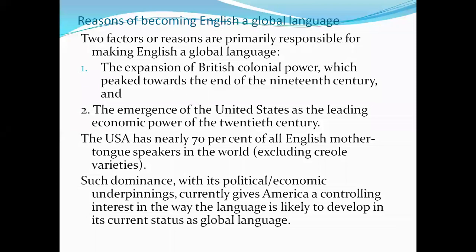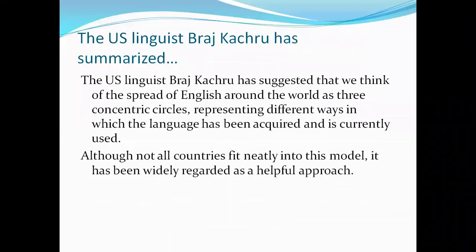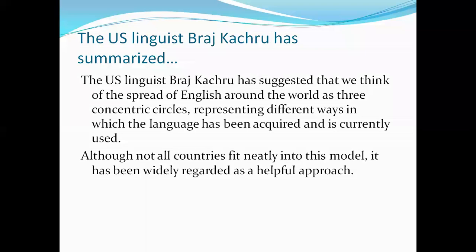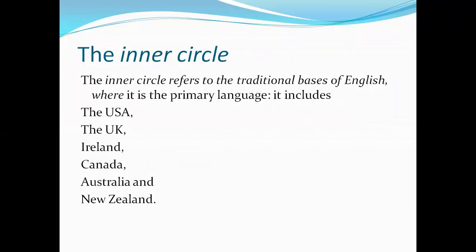What about the other parts of this world regarding English language? In this regard, the US linguist Braj Kachru has summarized the situation. Kachru has suggested that we think of the spread of English language around the world as having three circles. These three circles represent the English language nowadays. According to Kachru, the first circle he has called the inner circle.